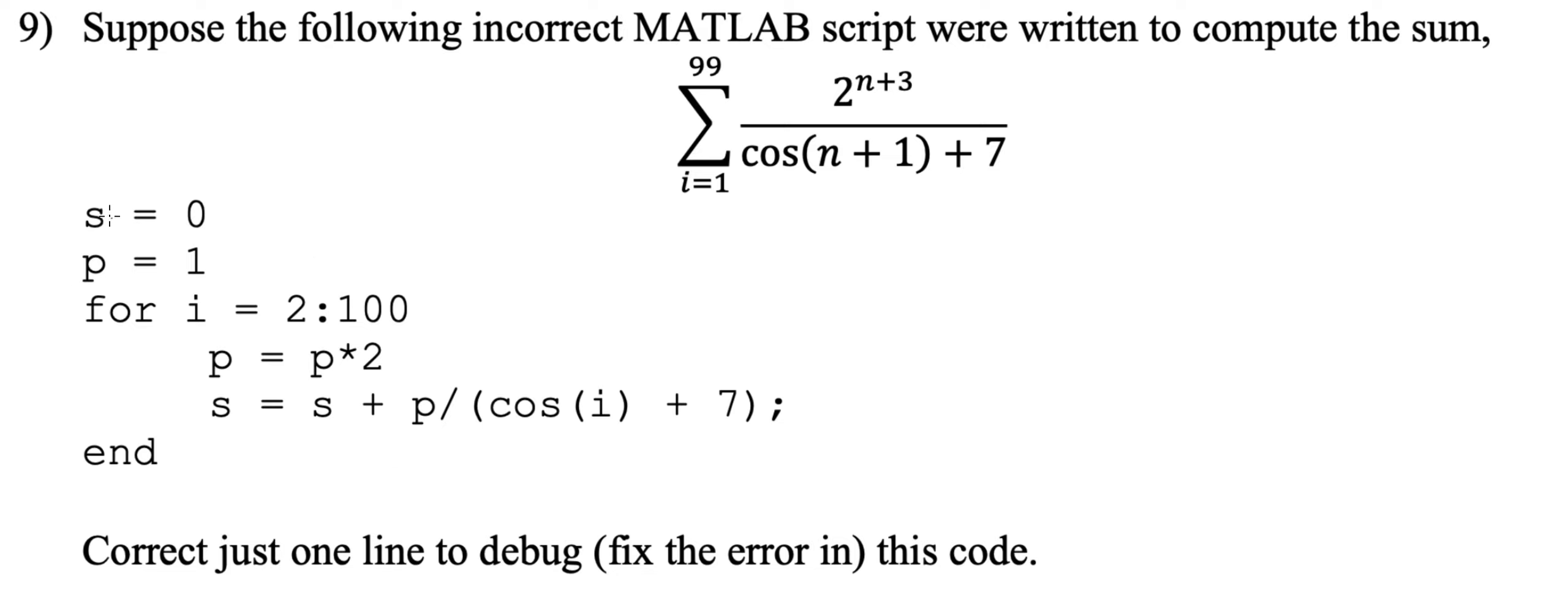Let's start reviewing it. It says s equals zero, so I'm assuming this might be the sum. P equals one, I think that might be a running product. It says for i equals 2 through 100, and that makes sense because 2 through 100 is 99 iterations and we have 99 over here, so that's correct.